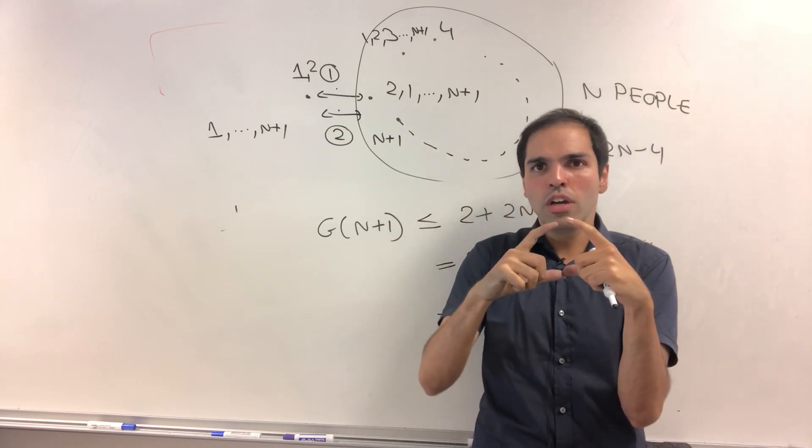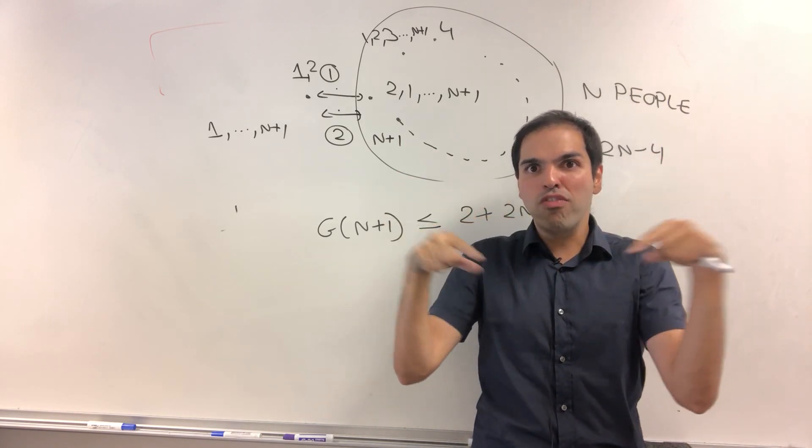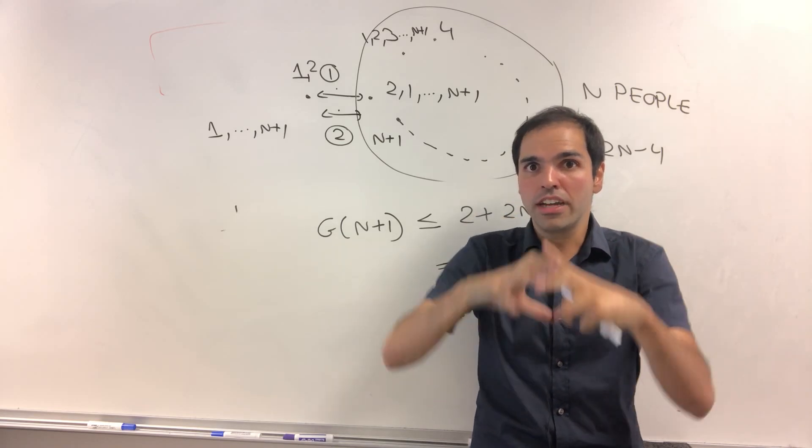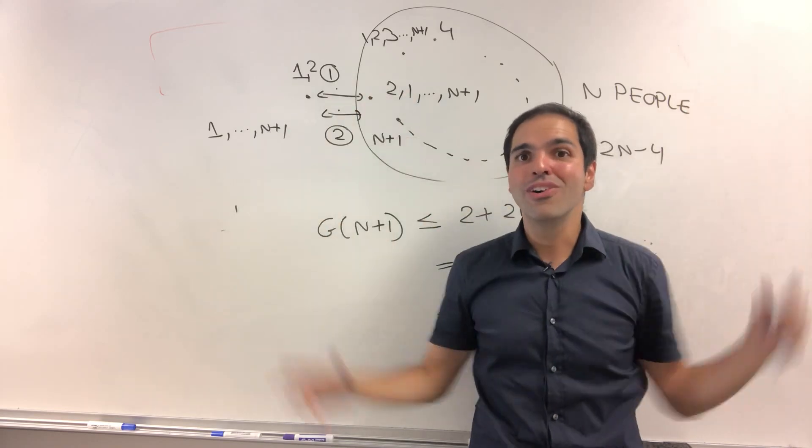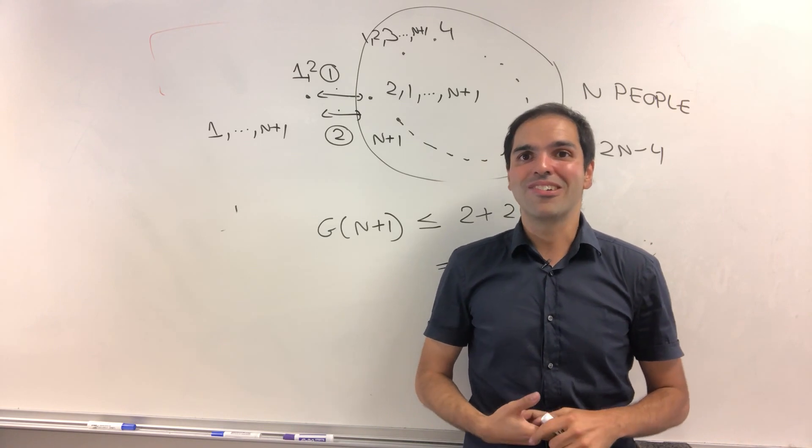But again, it turns out it's true that it's equal to two n minus four. And from what I heard is apparently what you have to do, you have to form a clique of four people. And those are like the center. And then those four people, they give you all the other information. How cool is that?